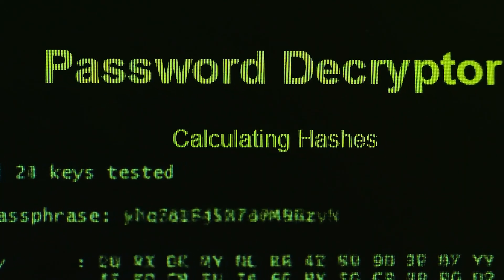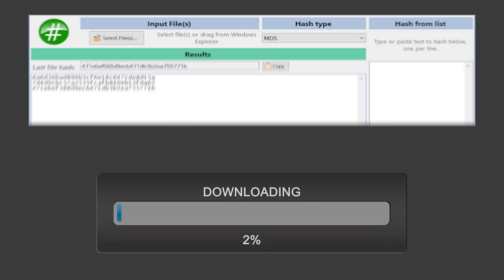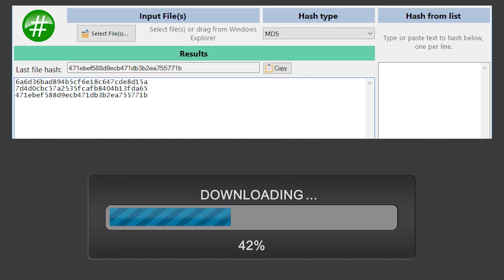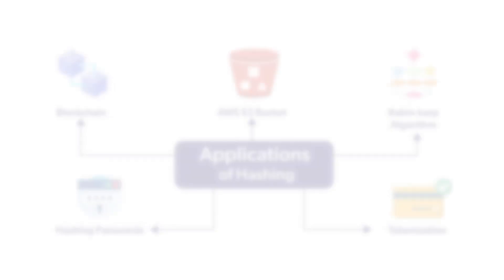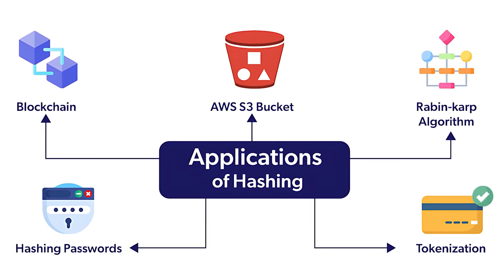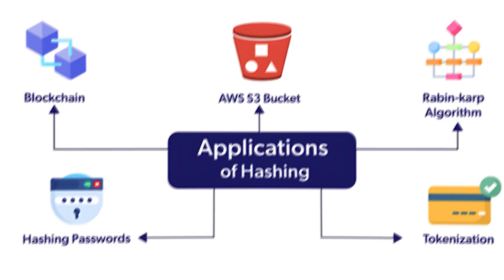Unless all subsequent hashes are also altered, which is computationally impractical. Beyond Bitcoin, cryptographic hashing powers everything from securing passwords online to ensuring that the software you download hasn't been tampered with. It's a fundamental part of digital security architectures, making it a cornerstone of both cryptocurrency systems and broader digital communication networks.